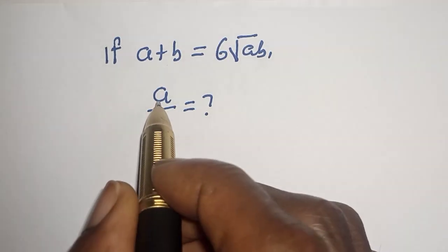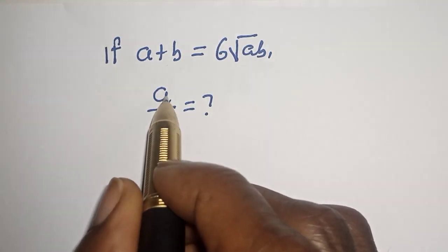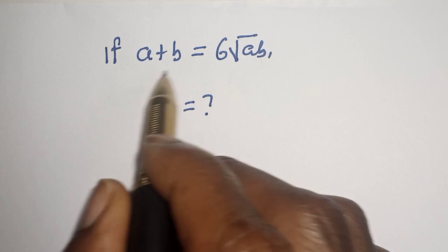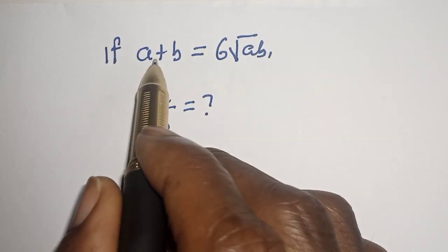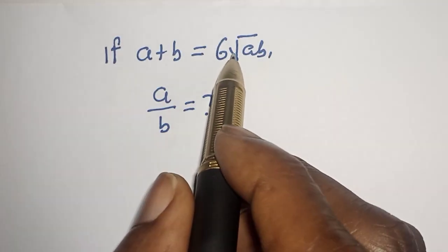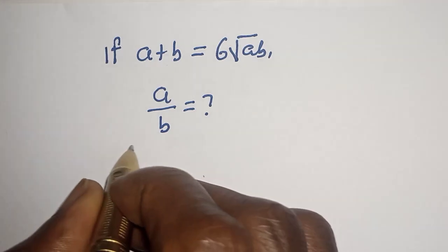Hello, welcome to Math G's. In this class, we want to find the value of A over B from this given equation: A plus B is equal to the sixth root of AB.